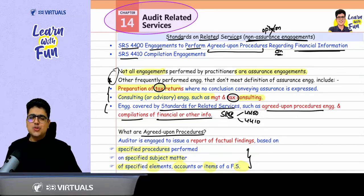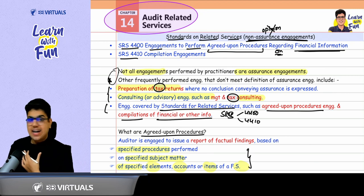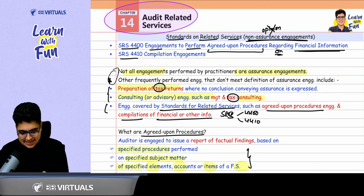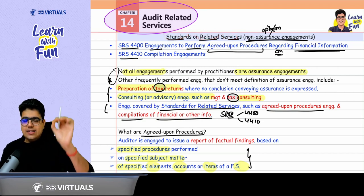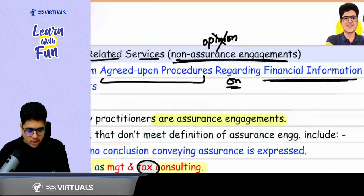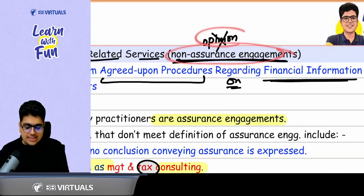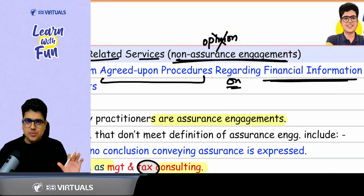Welcome, welcome, welcome. So today we begin with the new series of standards, that is SRS - standards on related service. These related services are not assurance engagements, not assurance engagements. That means in these cases, no opinion is to be expressed.